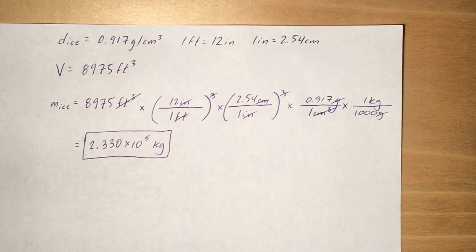The first being 1 foot equals 12 inches. The next being 1 inch equals 2.54 centimeters. Both of those you should know. The problem gives you the density of ice at 0.917 grams per cubic centimeter.